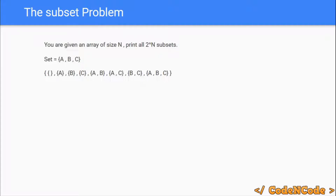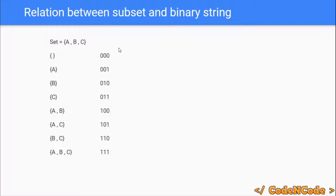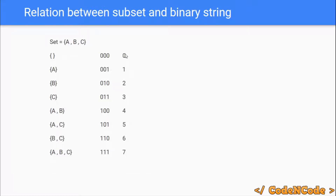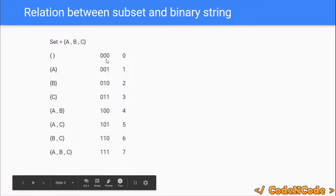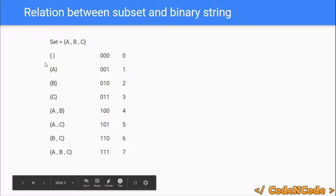The basic problem is: how can you print all the subsets of a given set? If I write down the subsets and also write down all the three-bit numbers alongside them, the numbers go from 0 to 2 raised to power 3 minus 1, which is 7. These are all the possible configurations of three-bit numbers. Now, can you find the relationship between these three-bit numbers and the subsets?